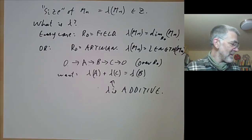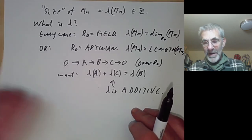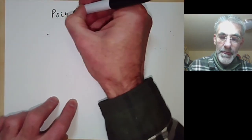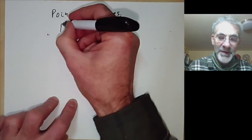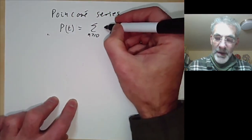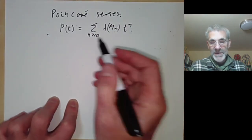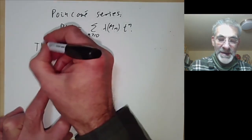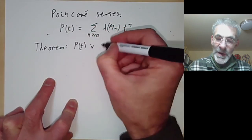Now we can put together all these numbers λ into something called a Poincaré series. We're going to define a formal power series in a variable t to be the sum over n ≥ 0 of λ(M_n) times t^n. This is just a formal power series with integer coefficients, and we've got a basic theorem that says P(t) is a rational function.